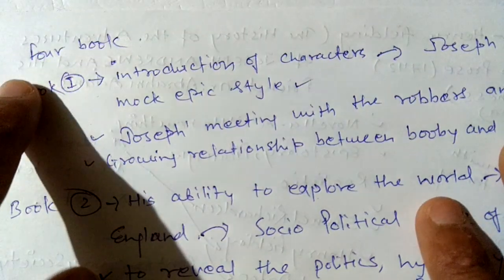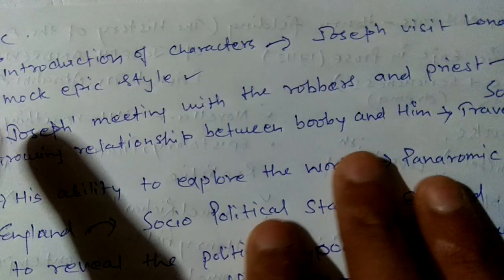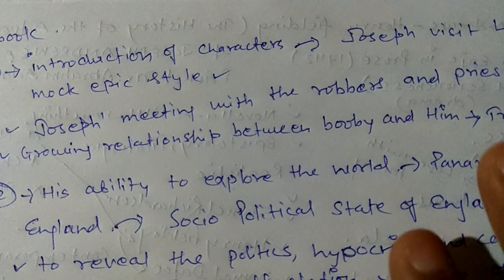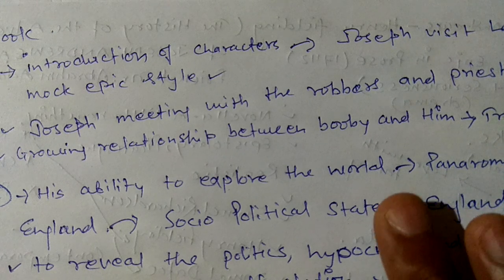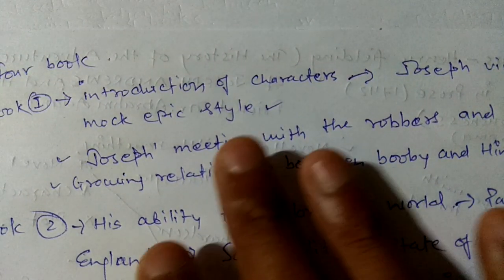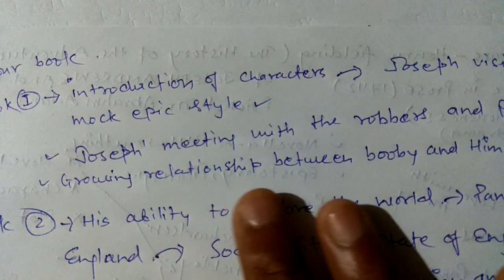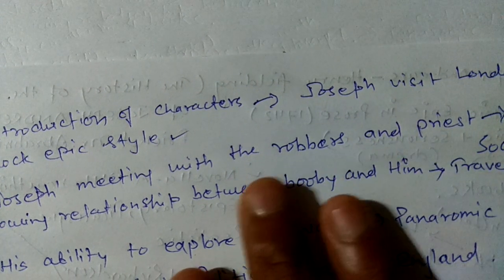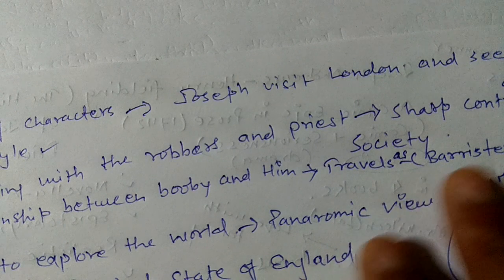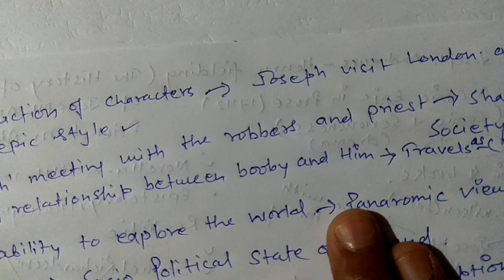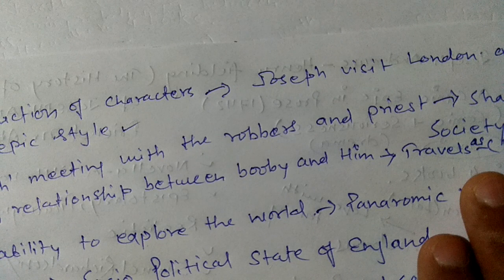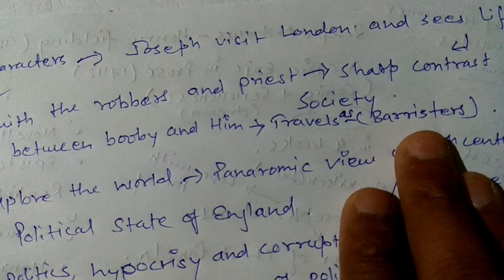Now let's talk about the books. There are four books in this work. In Book 1, some characters are introduced, and Joseph visits London and sees the lifestyle there. In this book, Fielding uses the mock-epic style — Joseph meets robbers and a priest, which shows a sharp contrast in society. The growing relationship between Lady Booby and him is also described, and he travels as a barrister.